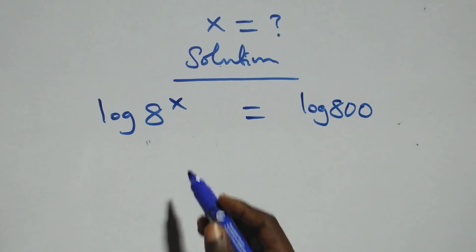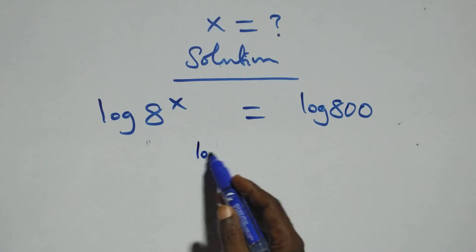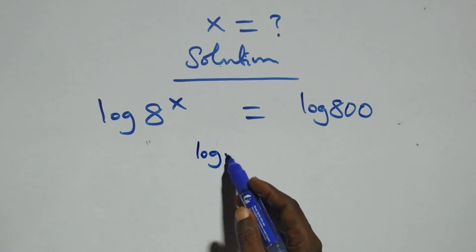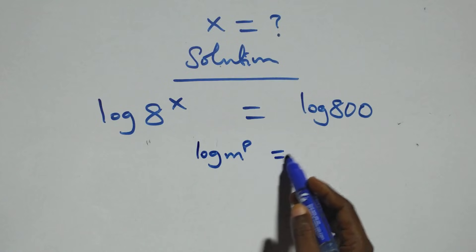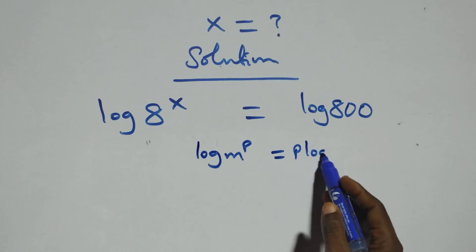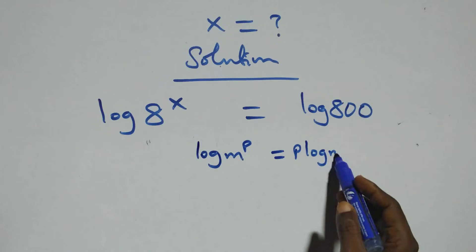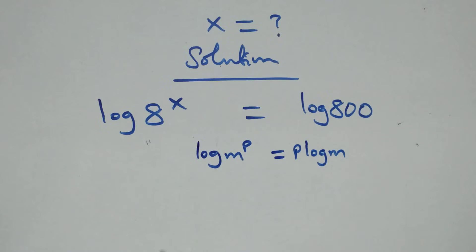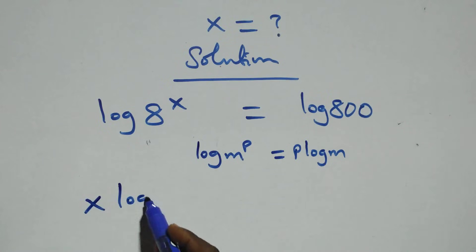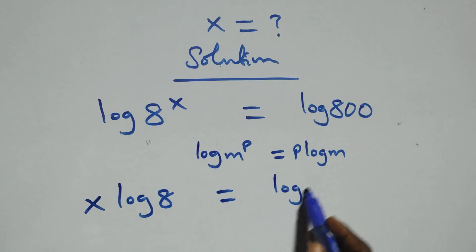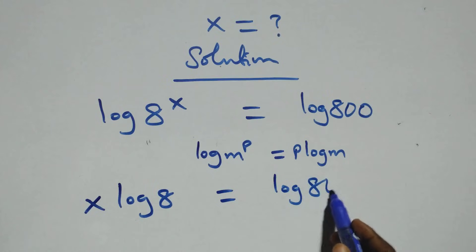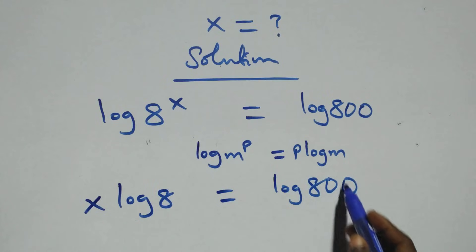Then we apply the power rule of logarithm, where log m raised to power p is the same thing as p log m. So here we have x log 8 equals to log 800 on the right side.